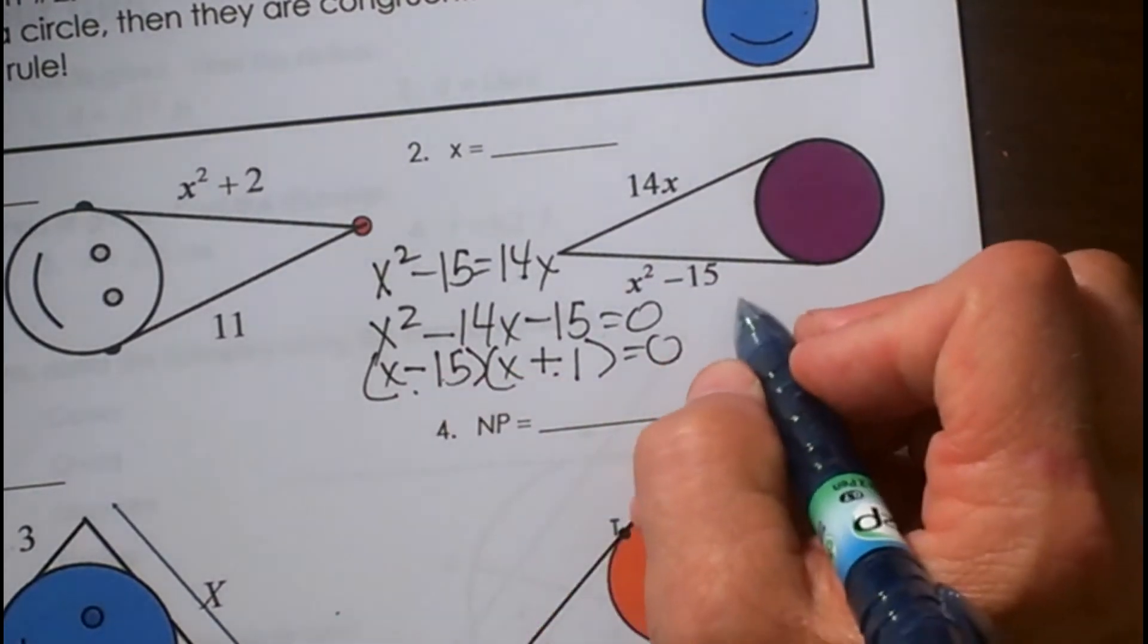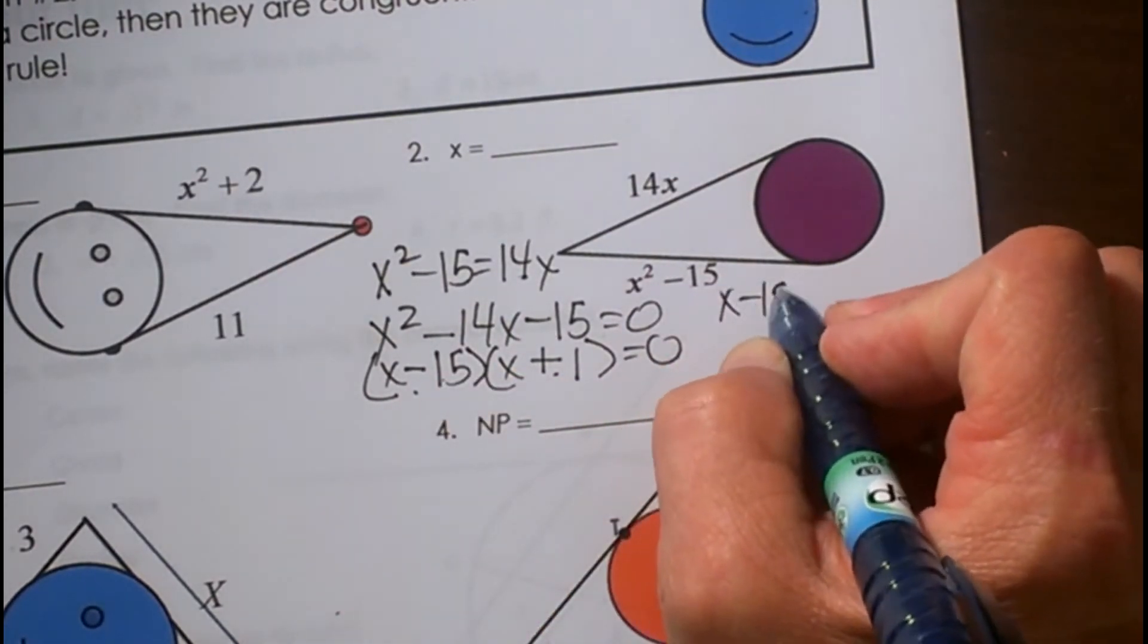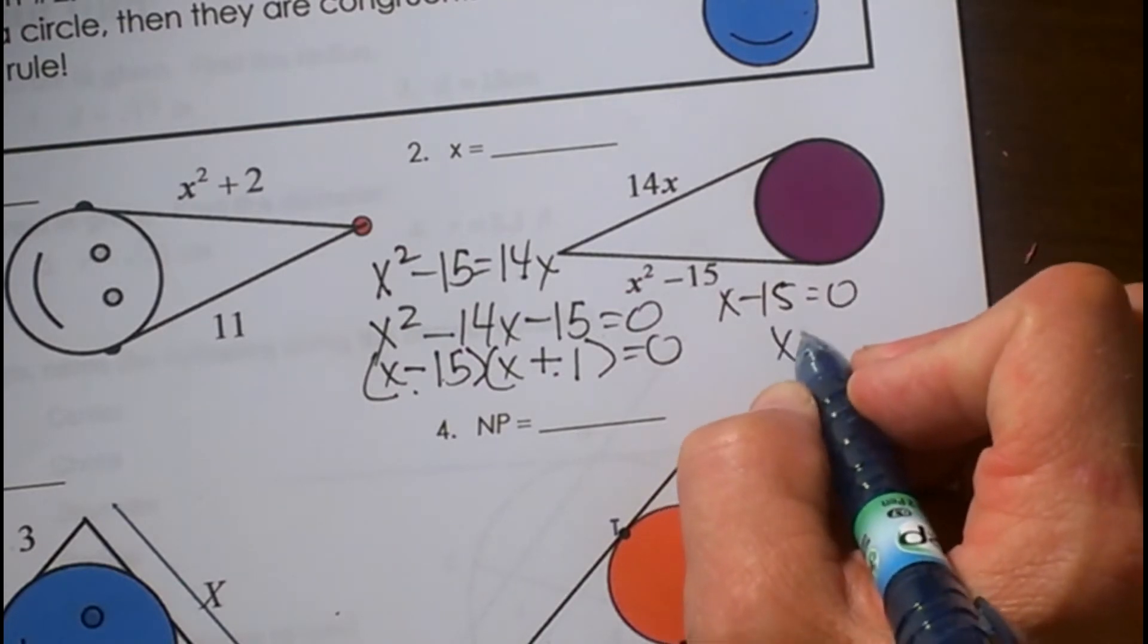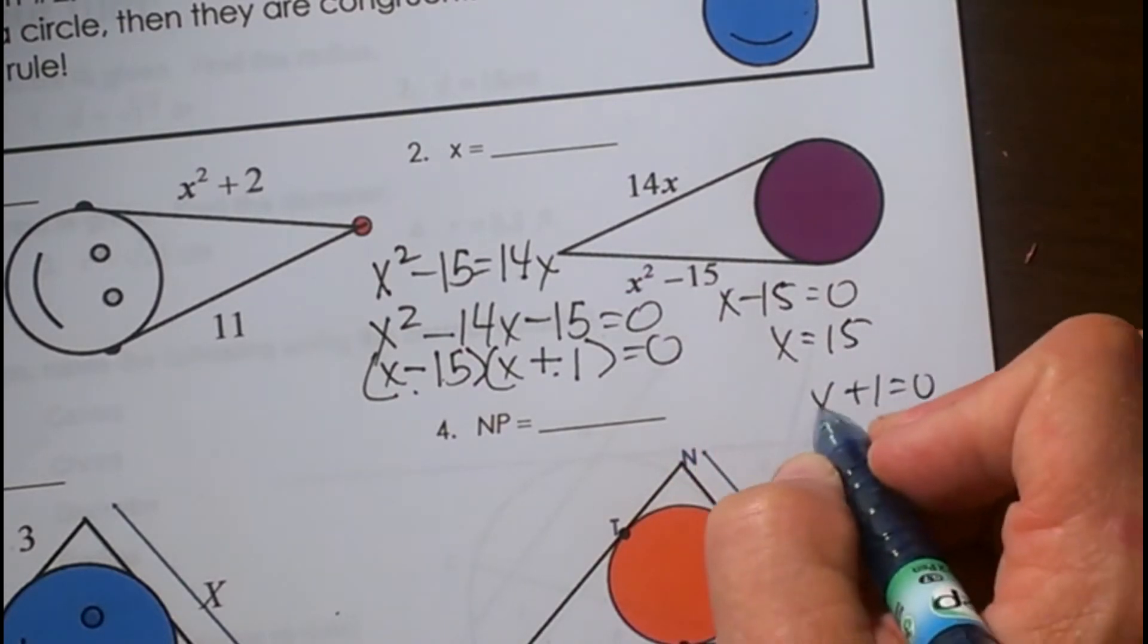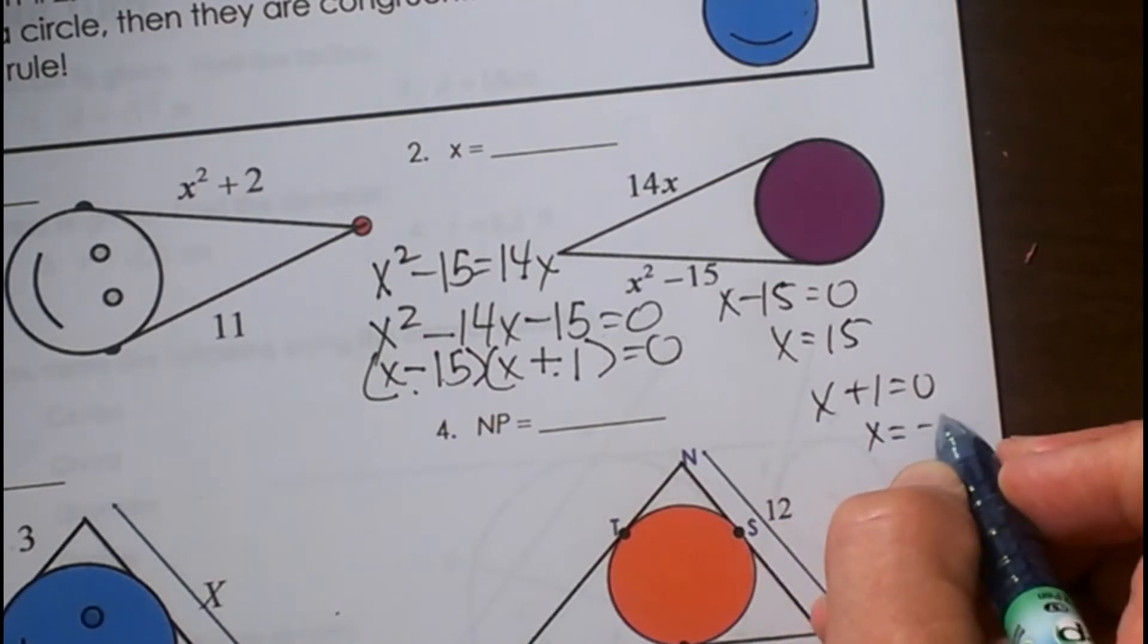I want a negative 15 and a positive 1 because that gives me a negative 14 equals 0, and to solve this quadratic my answer would be x - 15 equals 0, so x is 15, or x + 1 equals 0, so x is negative 1.